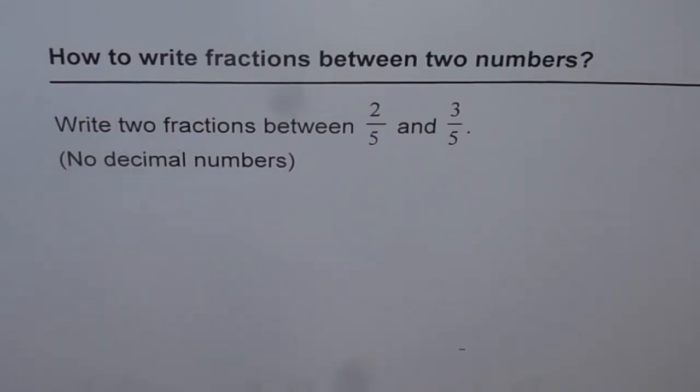Now what could be there between 2 over 5 and 3 over 5? Well, both 2 and 3 are consecutive numbers. In between and without decimals, how can I do that?